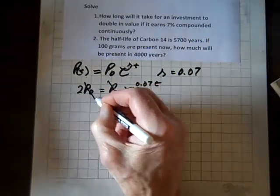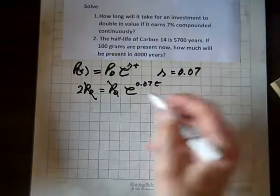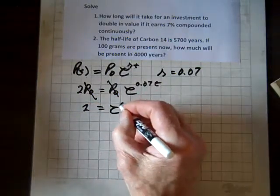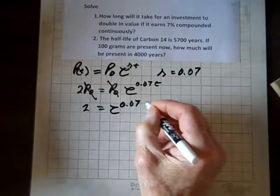Now, look at the P sub 0's are going to divide out. And so we're left with 2 equals e to the 0.07t.